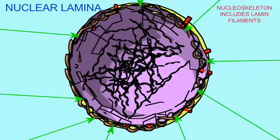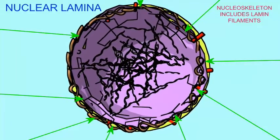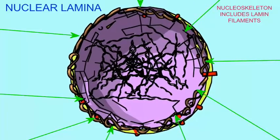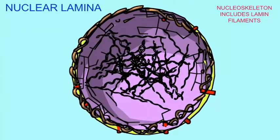The mesh of intermediate filaments, or nuclear lamins, which forms just deep to the inner nuclear membrane, is known as the nuclear lamina.